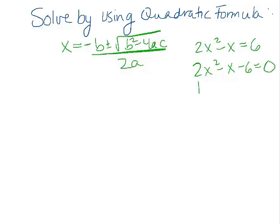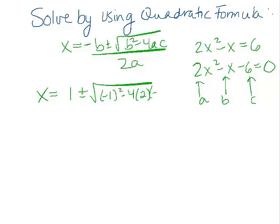So I have an a value of 2, a b value of negative 1, and a c value of negative 6. Okay. So if b is negative 1, I'm just going to put a positive 1 in for negative b. And then my square root of negative 1 squared minus 4 times a times c. I'm just plugging in all those values over 2 times 2.